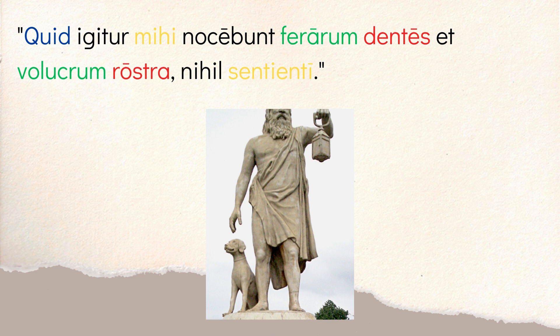Diogenes delivers his philosophical punchline: 'quid igitur mihi nocebunt ferrarum dentes et volucrum rostra nihil sentienti?' — What therefore will harm me? The 'dentes ferrarum' — the teeth of the beasts — and the 'rostra volucrum' — the beaks of the birds — what harm will they do to me, 'nihil sentienti,' feeling nothing? That participle 'sentienti' — feeling nothing — is the whole point.